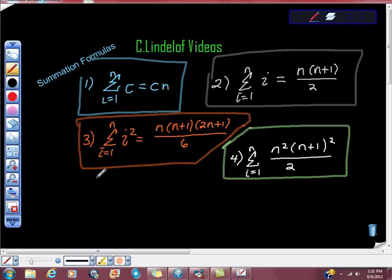So the third one is this. If we have the summation of I squared from I equals 1 to N, it's the same as saying N times the quantity N plus 1 times the quantity 2N plus 1 all over 6. I hear you.